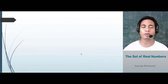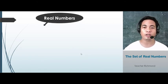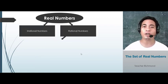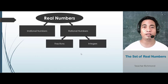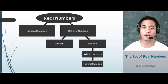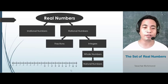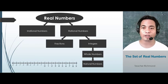To summarize what we have learned: real numbers are made up of both irrational numbers and rational numbers. From rational numbers, we can see fractions and also integers. Under integers, we have positive and negative integers, and under integers, we also have whole numbers and natural numbers.